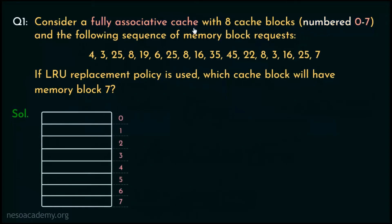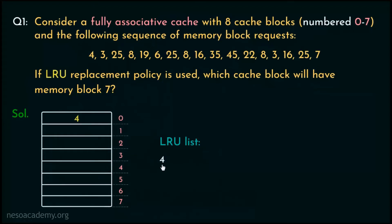The cache is a fully associative cache with eight cache blocks numbered 0 to 7. Since LRU replacement policy is being used, we are going to maintain one LRU list. When the processor requests block number 4, it will be placed inside cache line number 0 and included in our LRU list. At the end of the list, whichever block is present is the most recently used block — so at this point, 4 is the most recently used block.